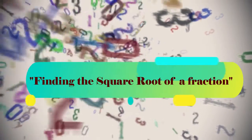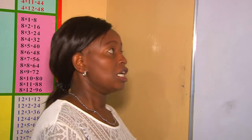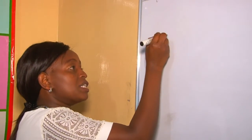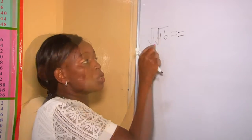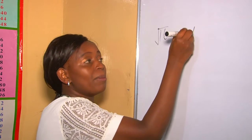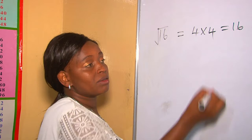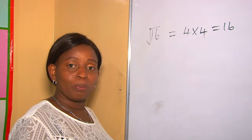Welcome to my channel. Our lesson today is square root of fractions. To begin with, what is a square root? The square root of a number is a value that when multiplied by itself gives the same number. For instance, given the square root of 16 — which number multiplied by itself gives 16? The number is 4, so 4 times 4 equals 16. This comes from our lesson about perfect squares.